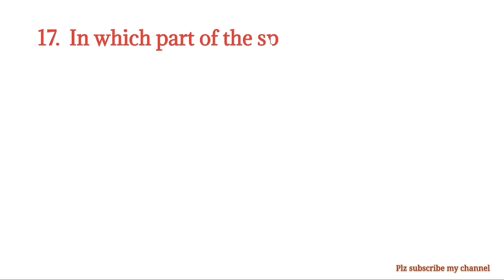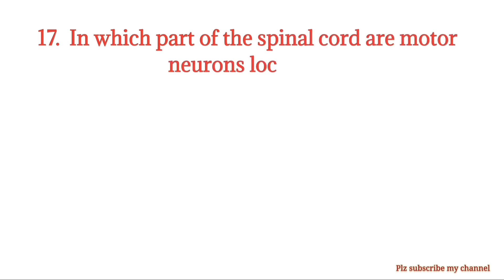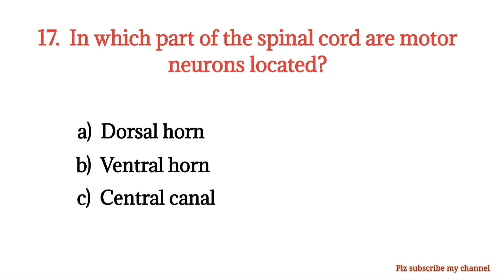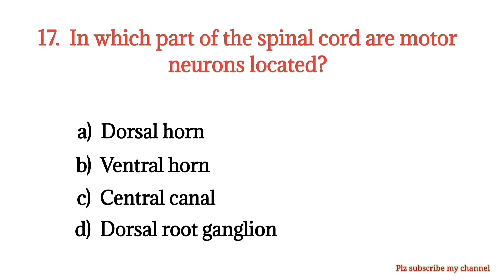MCQ number 17. In which part of the spinal cord are motor neurons located? Option A: Dorsal horn. Option B: Ventral horn. Option C: Central canal. Option D: Dorsal root ganglion. The right option is Option B.